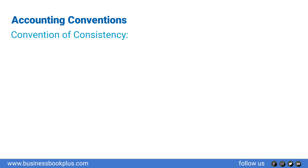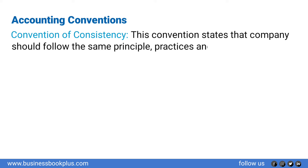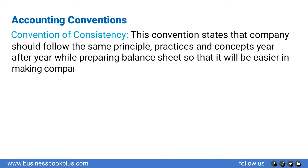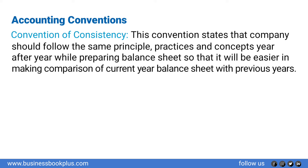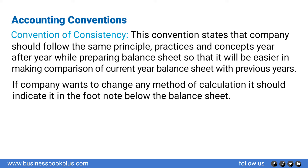Convention of consistency: this convention states that the company should follow the same principles, practices, and concepts year after year while preparing the balance sheet, so that it will be easier to make comparisons of the current year's balance sheet with previous years. If a company wants to change any method of calculation, it should indicate it in a footnote below the balance sheet.